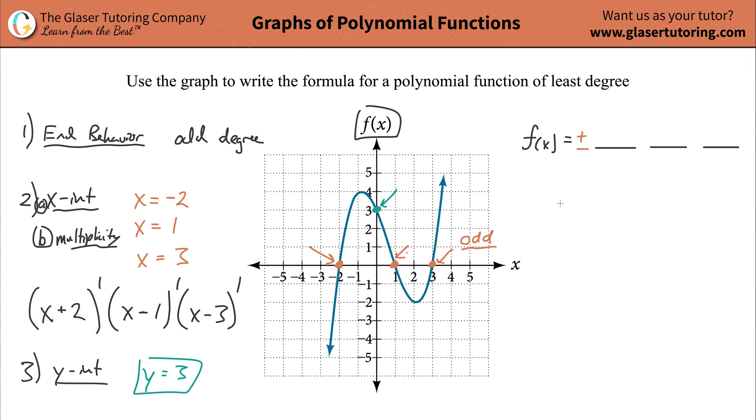So after we got all of this stuff labeled out, we can basically find the function. So f of x, what we're going to now do, you can drop this positive sign because if you don't put anything there, it's assumed to be a positive. And we're going to place in now our three factors in those three positions. So it's going to be x plus 2, it's going to be then x minus 1, and then it's going to be x minus 3. Now, what we have to do is we have to do all these to the first power, but you don't have to write that in because again, it's assumed.